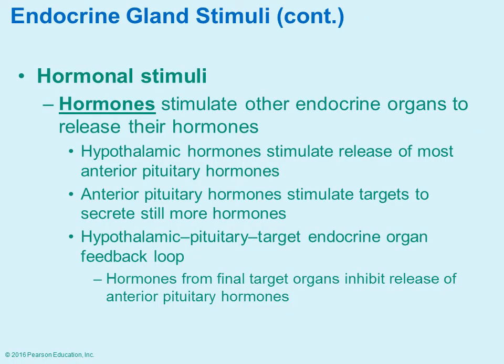Hormonal stimuli involve a cascade or stepwise process: one hormone receives a stimulus to be released, then that hormone acts as a stimulus for the release of another hormone. For example, hormones from the hypothalamus stimulate the release of many hormones in the anterior pituitary gland, and then some of those stimulate hormones elsewhere in the body. Think of it as a cascade.